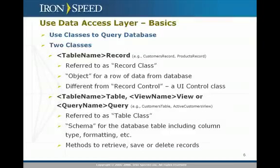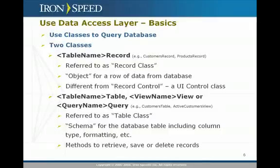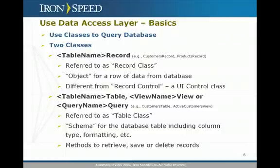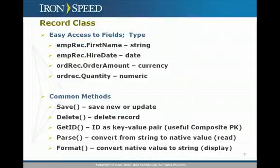The second class is a table class, which essentially corresponds to the schema of your table. The schema contains things like what columns are defined, and you can retrieve and operate on those columns as necessary. Whenever you are operating on multiple records, you would use the table class as opposed to the record class. So instead of using EmployeesRecord.GetRecords, you would do EmployeesTable.GetRecords, retrieving all of the data from the employees table.